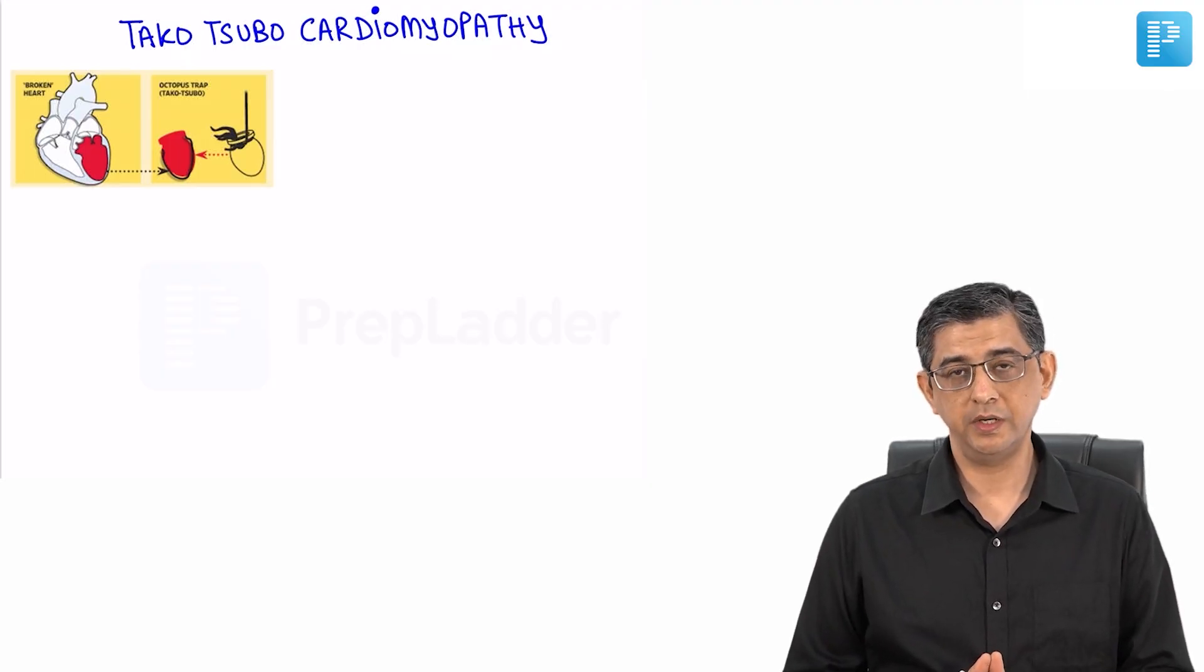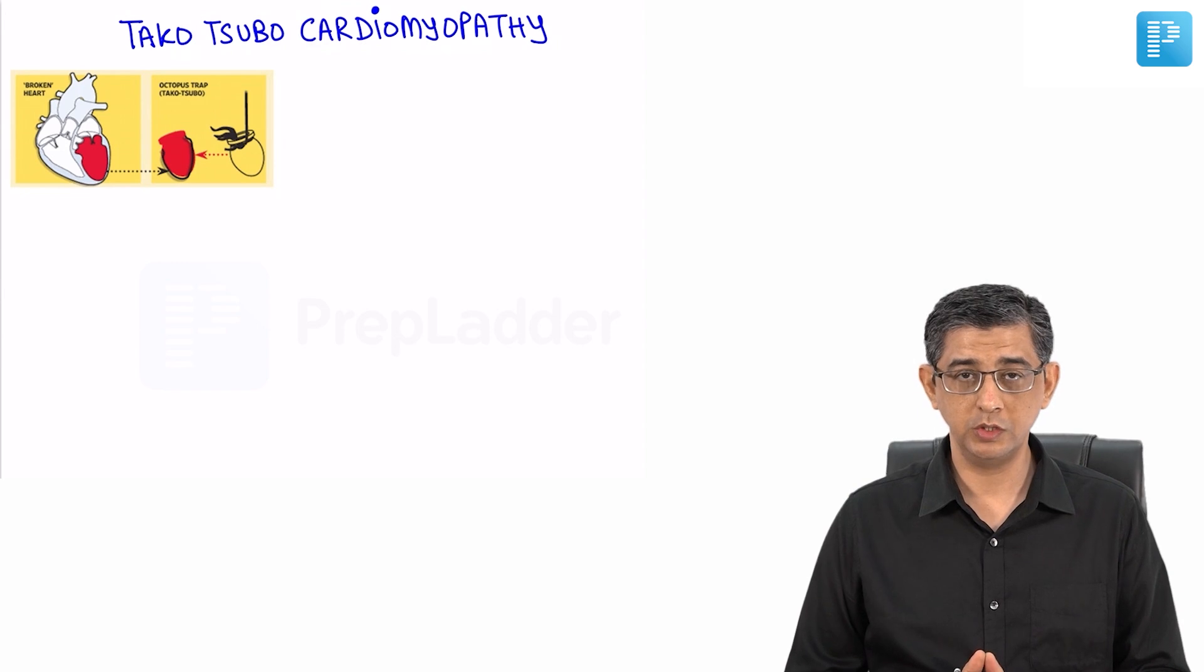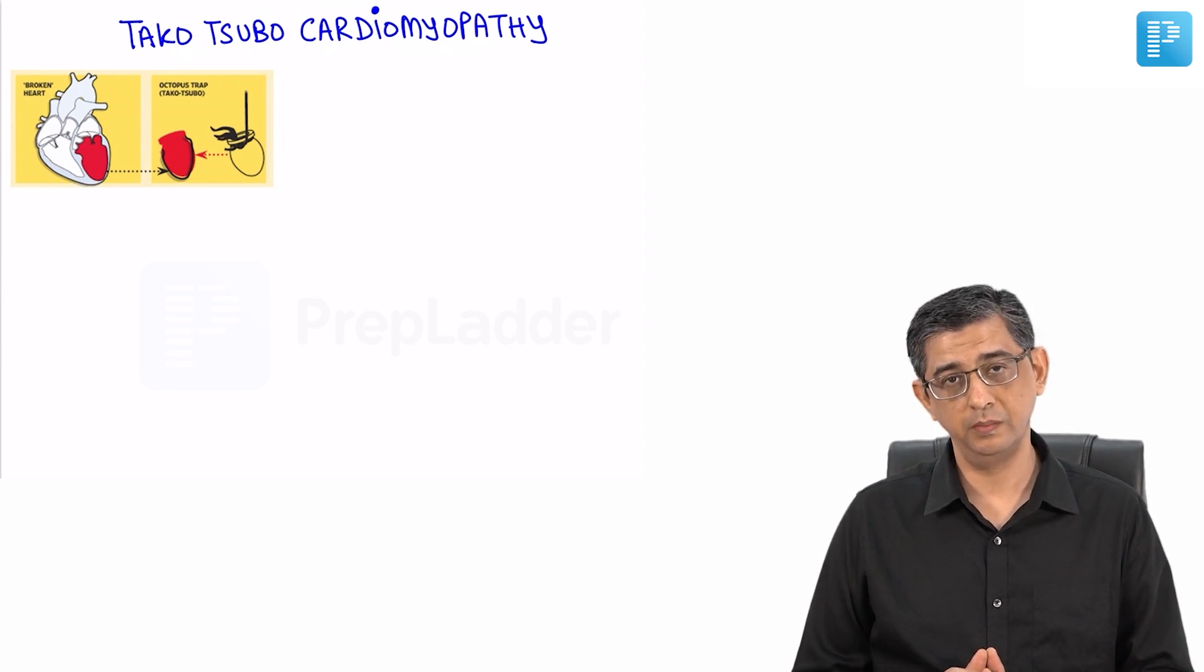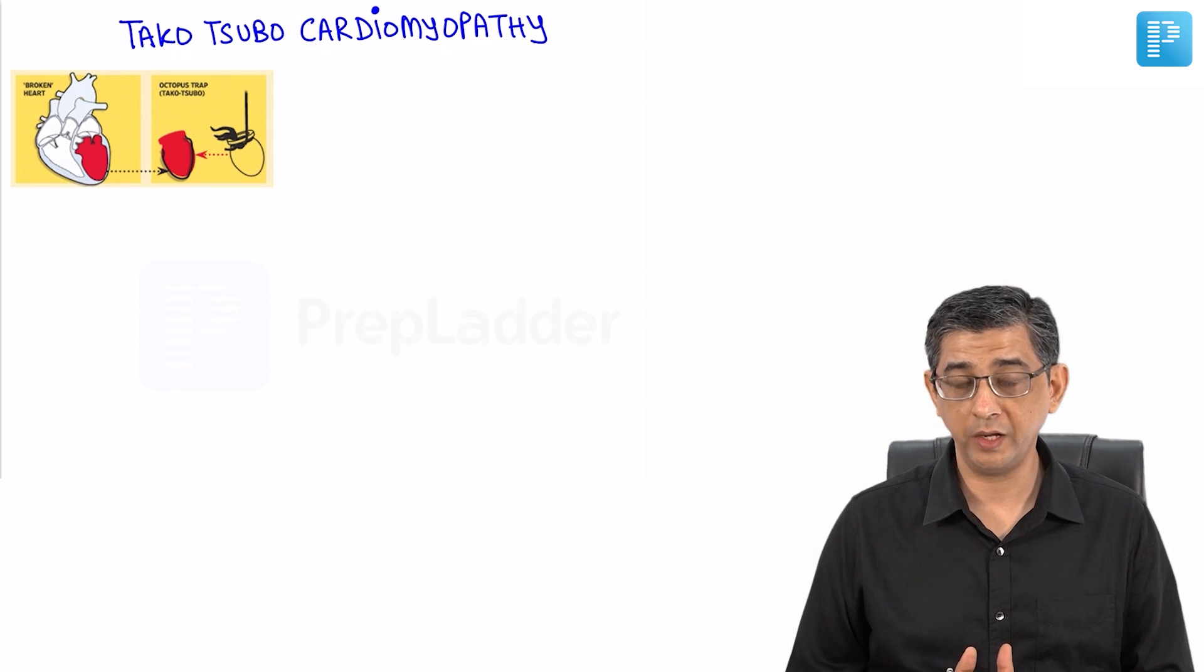Hi guys, welcome back. The next topic we're studying is Takotsubo cardiomyopathy, which is also called broken heart syndrome. This condition actually occurs due to excess of catecholamines.